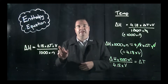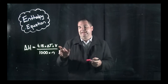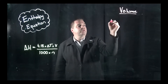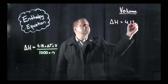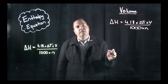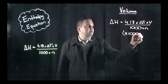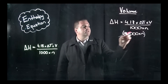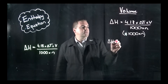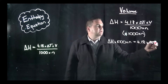Now let's look at rearranging our equation to calculate the volume, if that's what it's asking us. Again, starting from delta H equals 4.18 times delta T times V over 1,000 times N, very similar to what we did for temperature — we need to get rid of the 1,000 times N, so we multiply both sides by 1,000 times N. That cancels the denominator and we end up with delta H times 1,000 times the number of moles equals 4.18 times delta T times the volume.